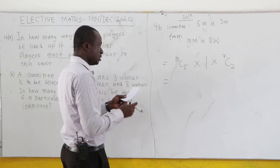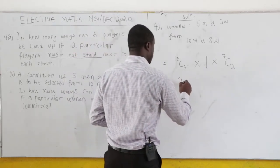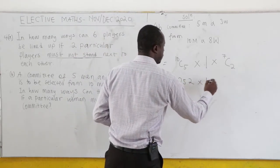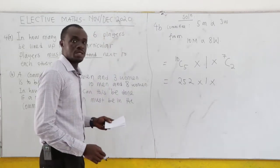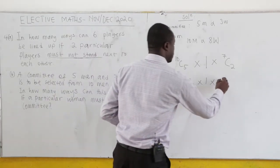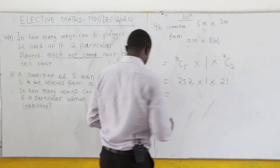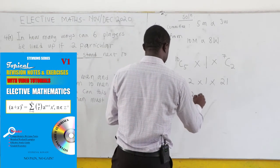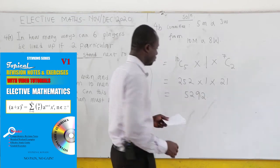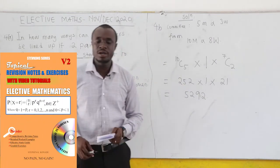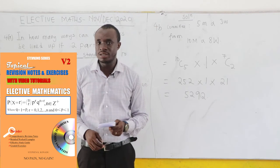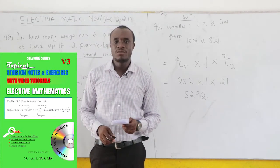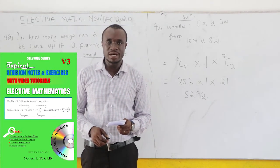Now what is 10 combination 5? Using the calculator, that is 252 times 1. Now what is 7 combination 2? Using the calculator, that is just 21. And when you multiply 252 times 21, we'll be getting 5292. Very easy. Don't forget to subscribe and also get the books that you are seeing on the screen. Get a copy for yourself. It will give you a firm foundation in math.